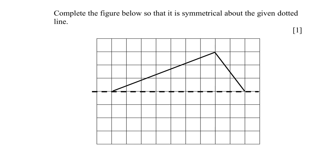Hello everyone, welcome to this part of the video where we are required to complete this particular figure so that it is symmetrical about the dotted line — that means it's like a mirror image. I'm going to have this particular point here because it is one-two-three, one-two-three. So it's like a mirror image, and I will be able to successfully complete this particular drawing.